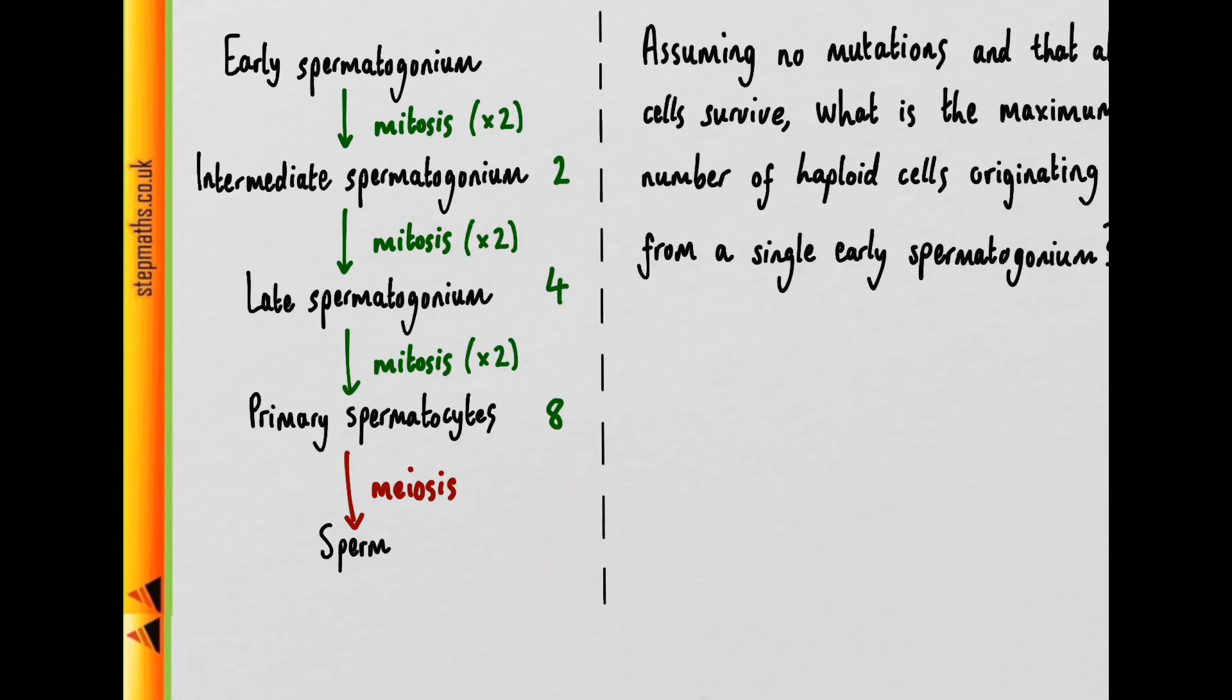And then, to get to sperm, we need to multiply by four, because meiosis generates four genetically different daughter cells for each original diploid cell.